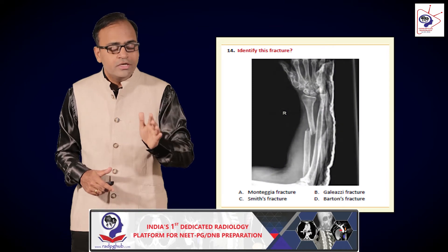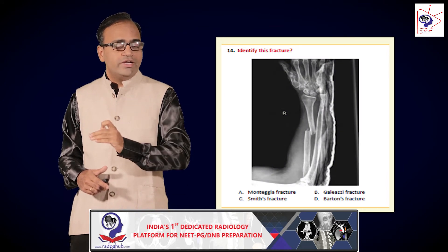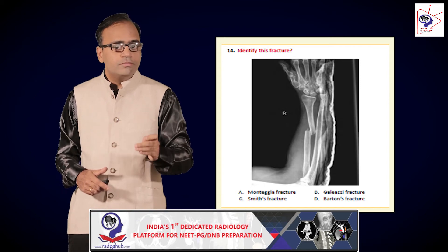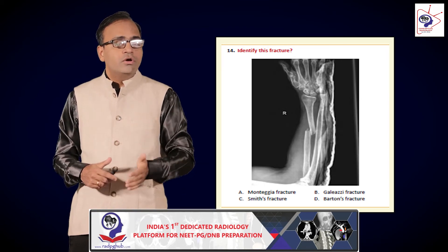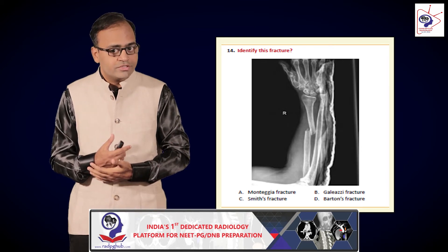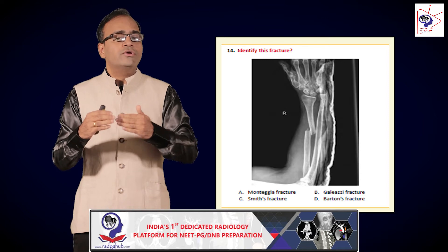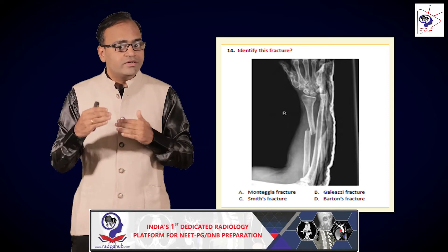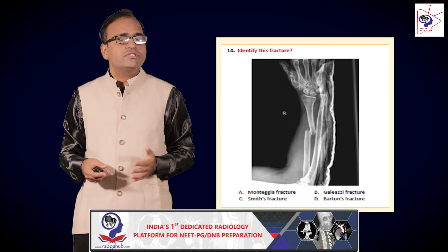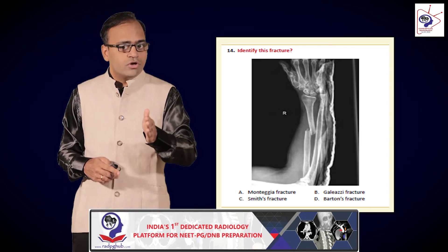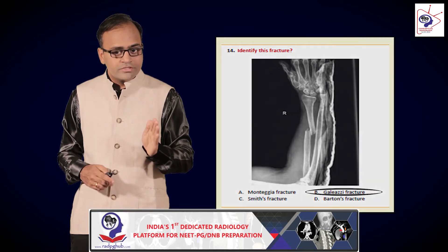Identify this fracture — another recently asked exam question. Looking at the bones, you can see it is the distal third of radius which is fractured, along with separation of the distal radio-ulnar joint where the ulna has subluxated distally. Fracture of the distal third of radius with dislocation of the distal radio-ulnar joint is what is called a Galeazzi fracture — that is the answer.